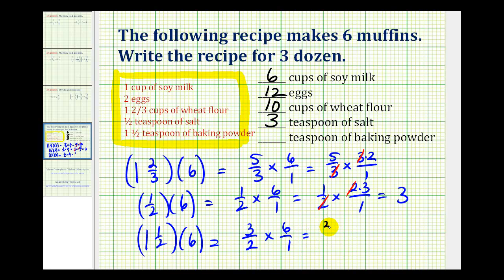And again, this simplifies. It's a common factor of two between the two and the six, here and here. So this product is equal to nine over one, or just nine. So it takes nine teaspoons of baking powder to make 36 muffins, or three dozen muffins.